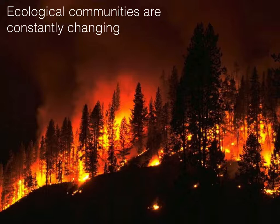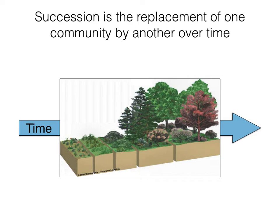If enough time went by after the fire, you might have noticed that new plants had begun to recolonize the area. A great place nearby to see a plant community currently in the process of coming back after a fire is at Stebbins Coldwater Canyon Preserve near Lake Berryessa. That area burned several years ago and you can see striking evidence of regeneration of plant and animal species returning. So ecological communities are constantly changing over time. This is a process called succession.